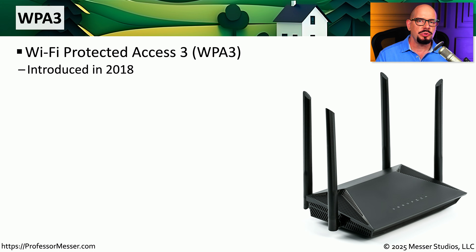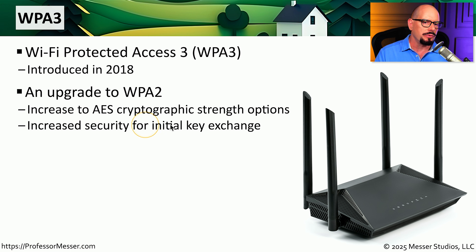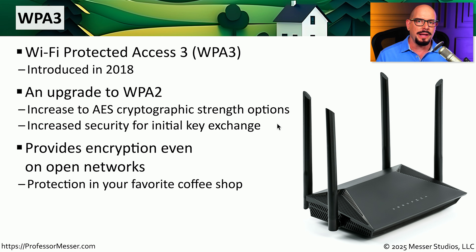As time went on, we continued to improve these standards, and WPA3 was introduced in 2018 — Wi-Fi Protected Access Version 3. There were a number of new features introduced with WPA3. The strength of the AES encryption was increased to be more secure. WPA3 also increased security for the initial key exchange when somebody first connects to the wireless network. Additionally, WPA3 included a new feature to provide encryption on open networks, so if you go to a coffee shop with an open wireless network, WPA3 can automatically create encryption keys so that everything going across the airwaves is still secure.